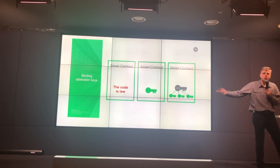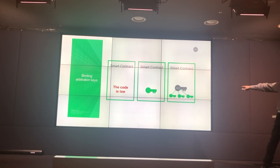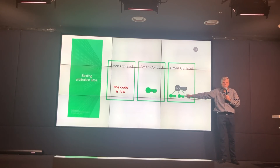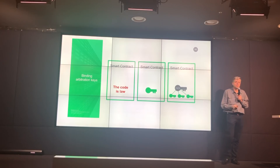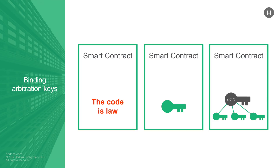So you have the flexibility: you can do code is law, you can have a dictator key, or you can have more like binding arbitration — governance, committees, binding arbitration judges, trusted parties. It is up to you when you create a smart contract. And there are no secrets — anybody who uses your smart contract knows what you did.